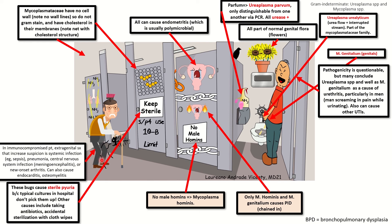The arthritis is represented by these little squiggly lines coming from the knees. We have the osteomyelitis bonefish representing the bone infection, as well as the Spartan hat representing the meningoencephalitis, and the pneumonia represented by these lungs strewn onto the bathroom stall. Endocarditis is not represented here, but of course, if you have bacteremia, you can get endocarditis with this.